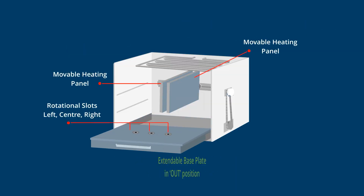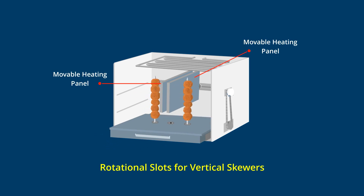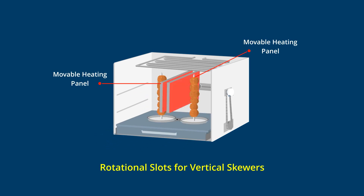The extendable base plate has slots for vertical skewers, which are convenient to roast kebabs and other food items, while the movable heating panels roast the meat on the rotating skewers.